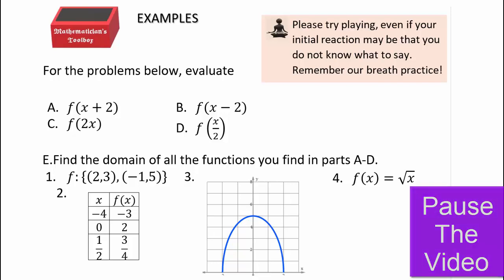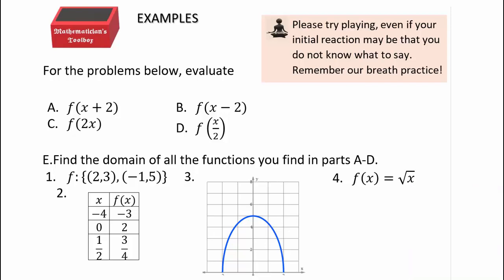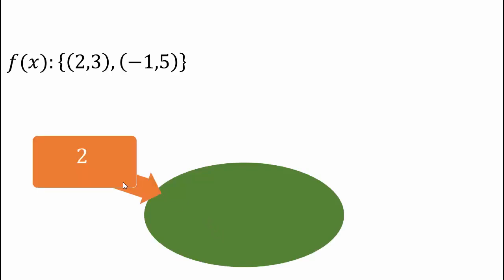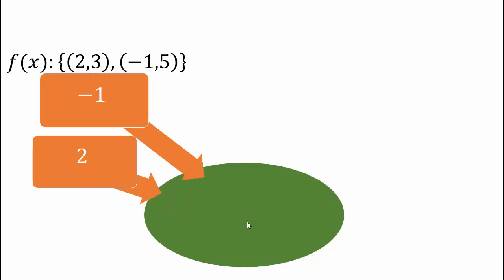We'll do the first one together. So f of x is given in set notation: input of 2, output is 3; input of negative 1, output is 5. So f of 2 is 3 and f of negative 1 is 5. When 2 is our input, our output is 3. When negative 1 is our input, our output is 5.